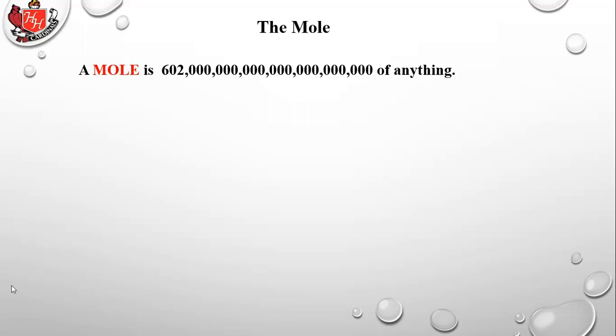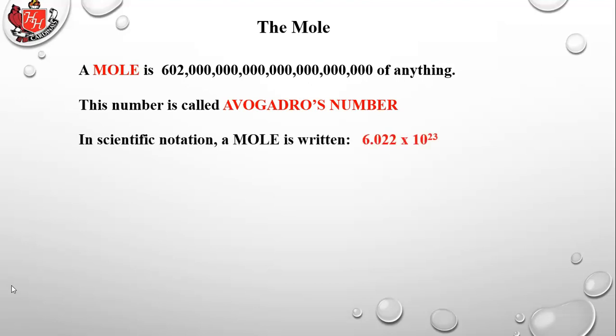A mole signifies a certain number called Avogadro's number, though throughout this course we'll just call it a mole. In scientific notation, a mole is written as 6.022 × 10²³. Now you see why we learned scientific notation — you don't want to write out a number that long, and you're going to work with it every single day in this class.